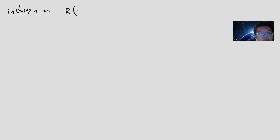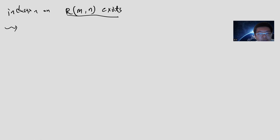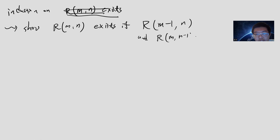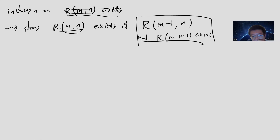So we can assume that R(M,N) exists for smaller values. We want to show R(M,N) exists if the previous smaller ones exist - specifically if R(M-1,N) and R(M,N-1) exist, then R(M,N) exists. If this is true, then by mathematical induction we can show that every R(M,N) exists.